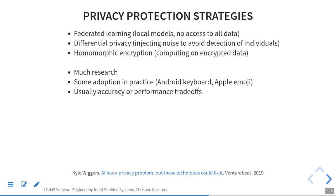The main three directions people seem to work on: First, federated learning — learning local models. This is actually used in production, like on Android keyboards or Apple emoji prediction, where local models are trained on the person's phone. The data of what they're typing never leaves the phone. You learn something local and merge it in an anonymized way without identifying individual people. Second, differential privacy is a formal notion where you say: looking at training data, you're not able to identify any individual.